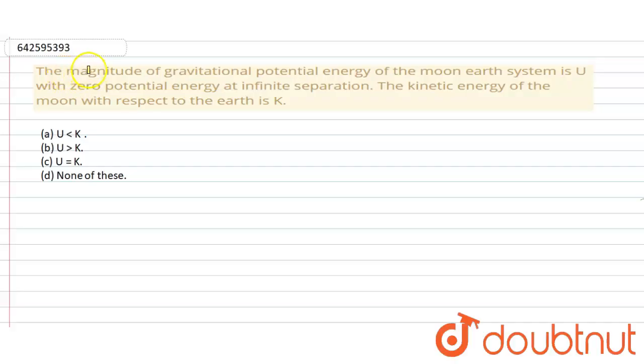Hello everyone, in this question, the magnitude of gravitational potential energy of moon-earth system is U with zero potential energy at infinite separation. The kinetic energy of the moon with respect to earth is K.